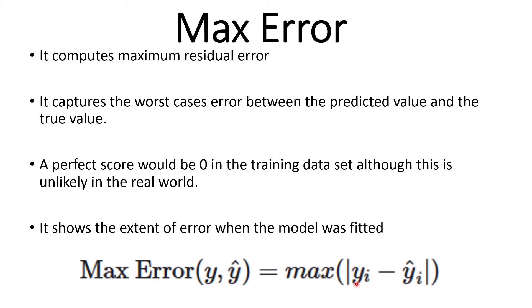And this is how to calculate it: this is the true value again and y hat is the predicted value. Basically you are doing a maximum of the absolute difference between the true value and the predicted value.